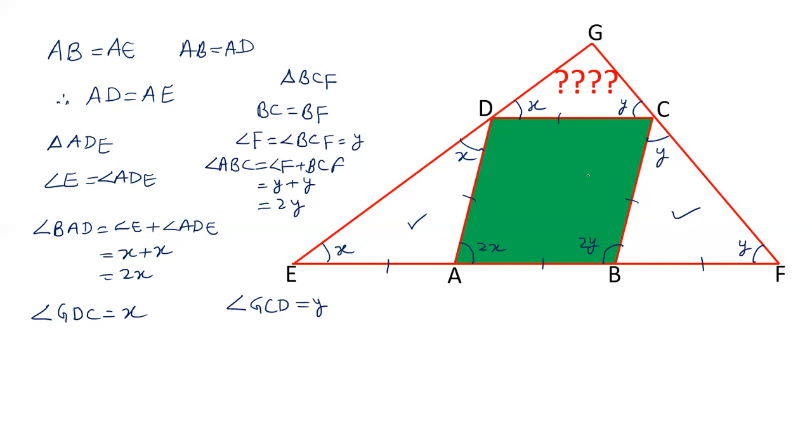In a rhombus, two adjacent angles are 180 degrees. This is a general property of a parallelogram. So angle BAD plus angle ABC equals 180. This is 2X and this is 2Y equals 180. Taking 2 common, X plus Y equals 90 degrees.